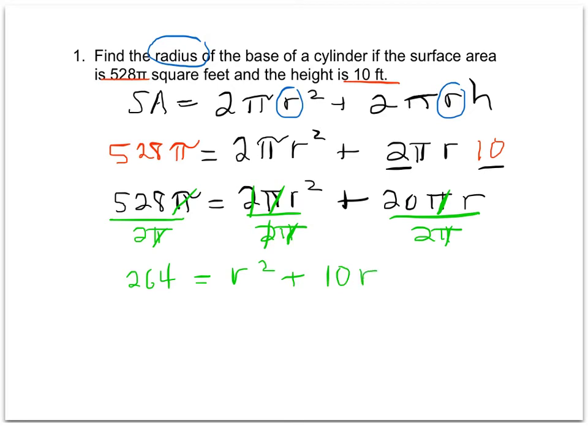Now that I've cleaned that up, it looks a lot easier to solve. You should notice that this is a quadratic equation because I have a squared term, r² + 10r, and then the constant number 264. If you see an equation that has a squared term in it, that should be a clue that you're going to factor this, and we're going to put it in standard form.